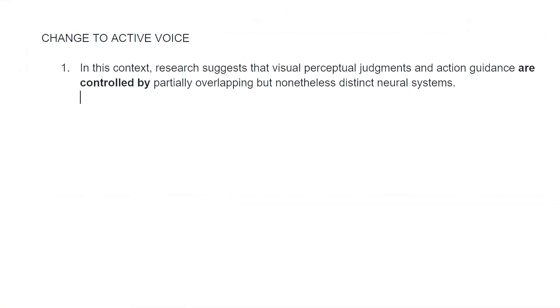As I said in the previous episode, in all sections of the paper — except for maybe the method section — you want to predominantly use active voice, which is considered better style and more engaging for the reader. For example: 'Research suggests that visual perceptual judgments and action guidance are controlled by partially overlapping but nonetheless distinct neural systems.'